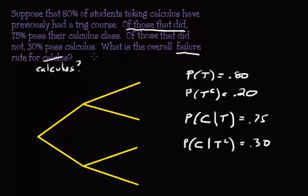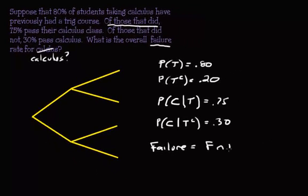So these are the pieces of information we know. Now, the question: what is the overall failure rate for calc? So if you're going to be included in the failure group of people, well, you could have either, let me write this, failure. You can fail and have taken trig, or you could have failed and not taken trig.